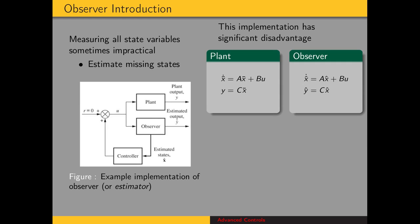There is one big problem with this implementation. Let's look at the state space representation for the plant and the observer. Here we have the state equation and the output equation — the standard notation we've been using. The observer is modeled exactly after the plant. So we have x-hat-dot, where x-hat is our estimate of the state vector, with the same input matrix and output matrix.